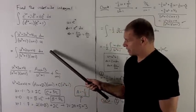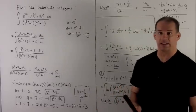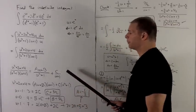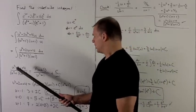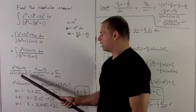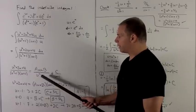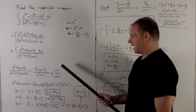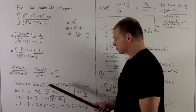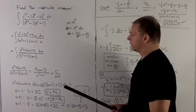We have this fraction, and notice the degree at the top is one less than the bottom, so we don't need to divide into the top. I set up the partial fraction expansion. We have a quadratic that doesn't factor anymore and one linear factor. So we're going to have au plus b above the u squared plus 1, and c goes with the u plus 1. I clear the denominators and then hunt and peck to find my coefficients.